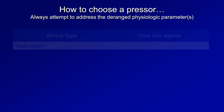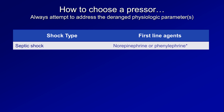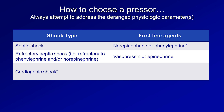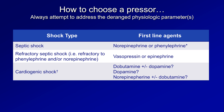For septic shock, the first-line agents are norepi or phenylephrine. For refractory septic shock, vasopressin or epinephrine is added. For cardiogenic shock, the historical conventional choice is dobutamine with or without dopamine, depending on whether additional blood pressure support is needed, as dobutamine does not necessarily raise blood pressure on its own. More recently, some clinicians have been using norepi with or without dobutamine, based on a controversial trial to be discussed shortly.